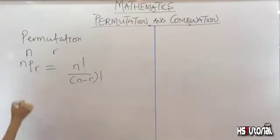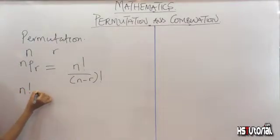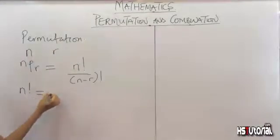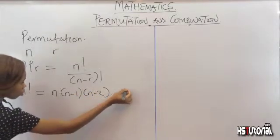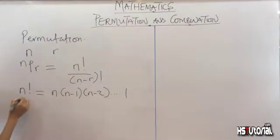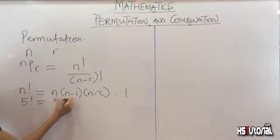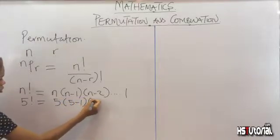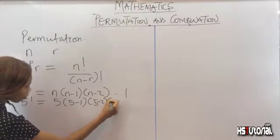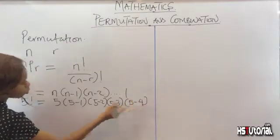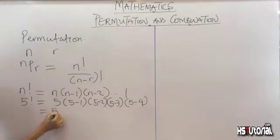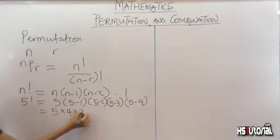Now what exactly is n factorial? n factorial is a mathematical expression used to denote n times (n minus 1) times (n minus 2) down to 1. For example, 5 factorial simply means 5 times 4 times 3 times 2 times 1.